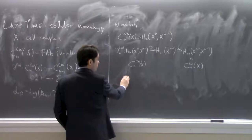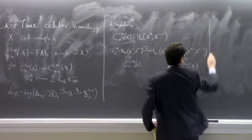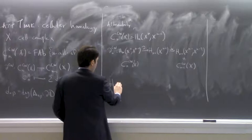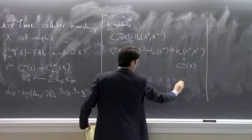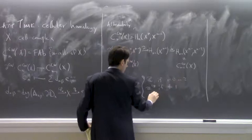So that was cellular homology. We used this to compute, for example, the homology of the orientable surface of genus G. We saw that you get Z if n equals zero or two, Z to the 2G if n equals one, and zero otherwise.